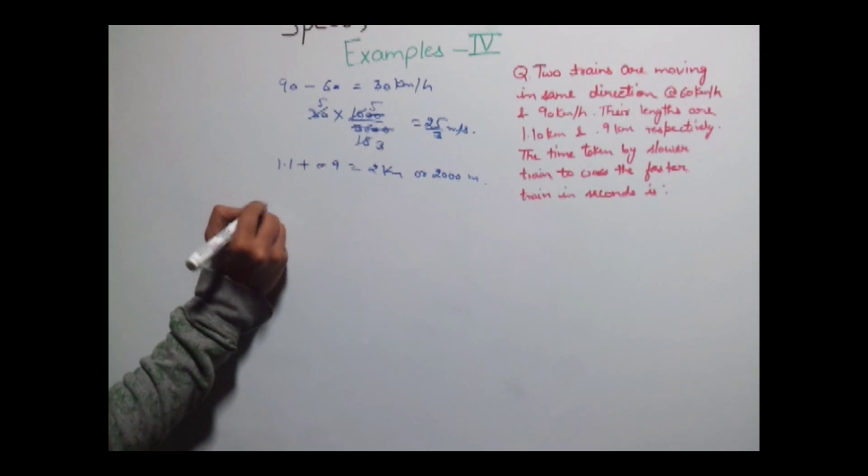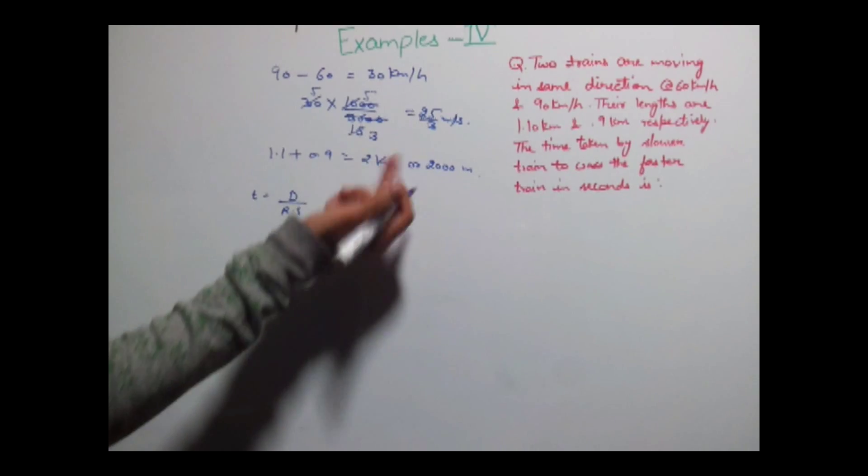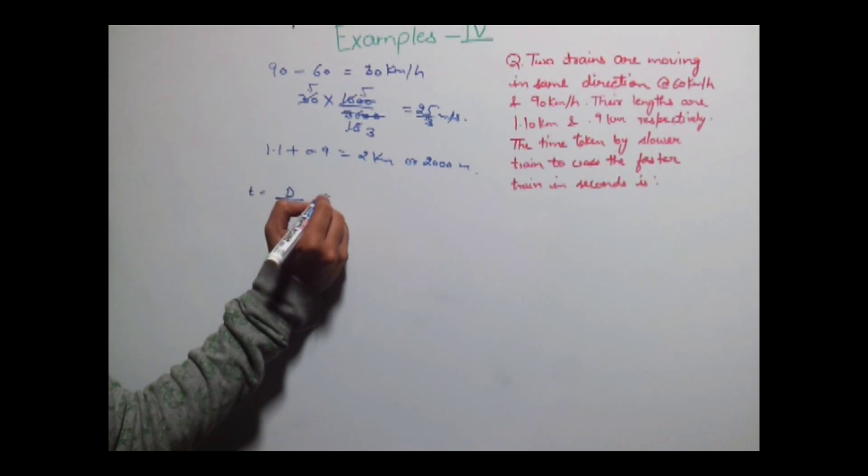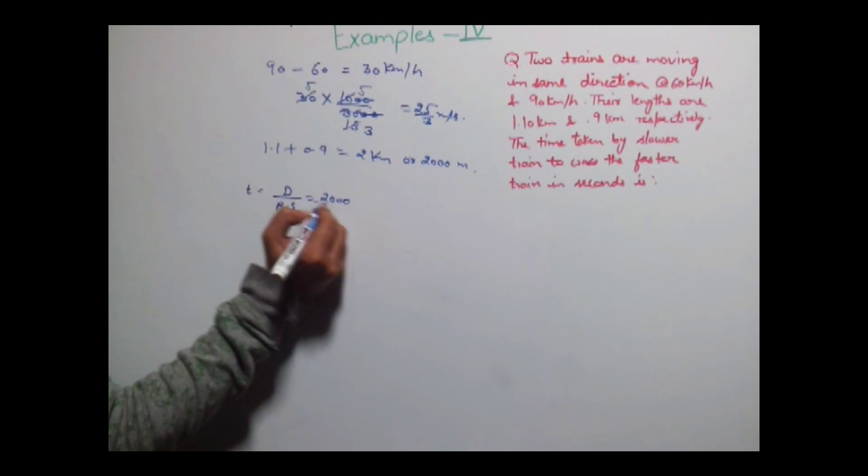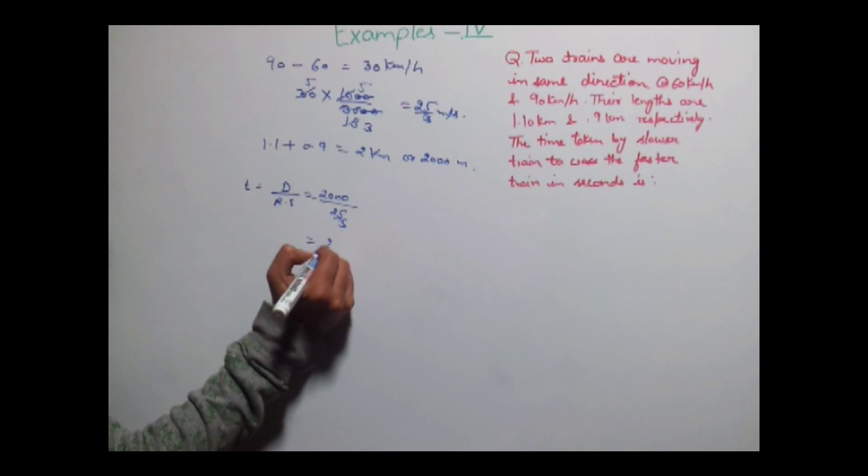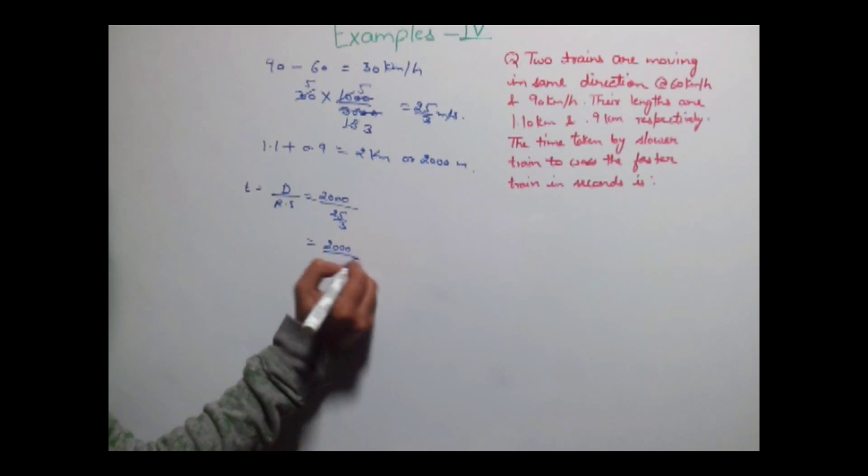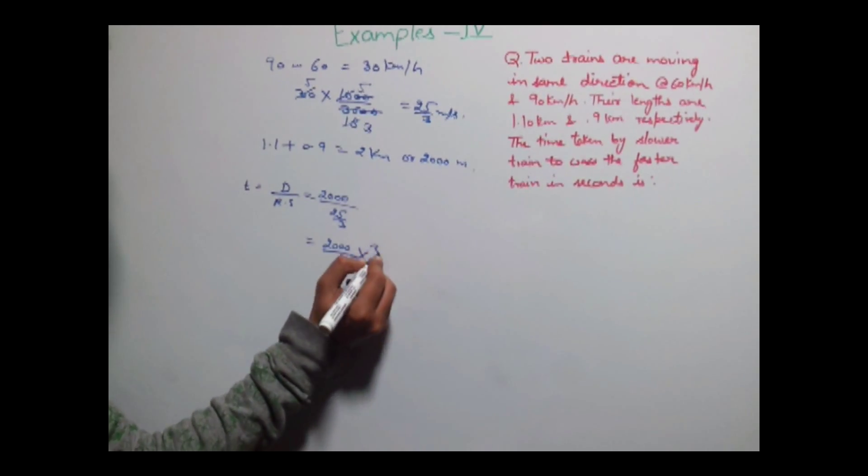Now time is equal to distance upon relative speed and our relative speed is 25 by 3 and distance is 2000. So 2000 upon 25 by 3 is equal to 2000 upon 25 into 3.